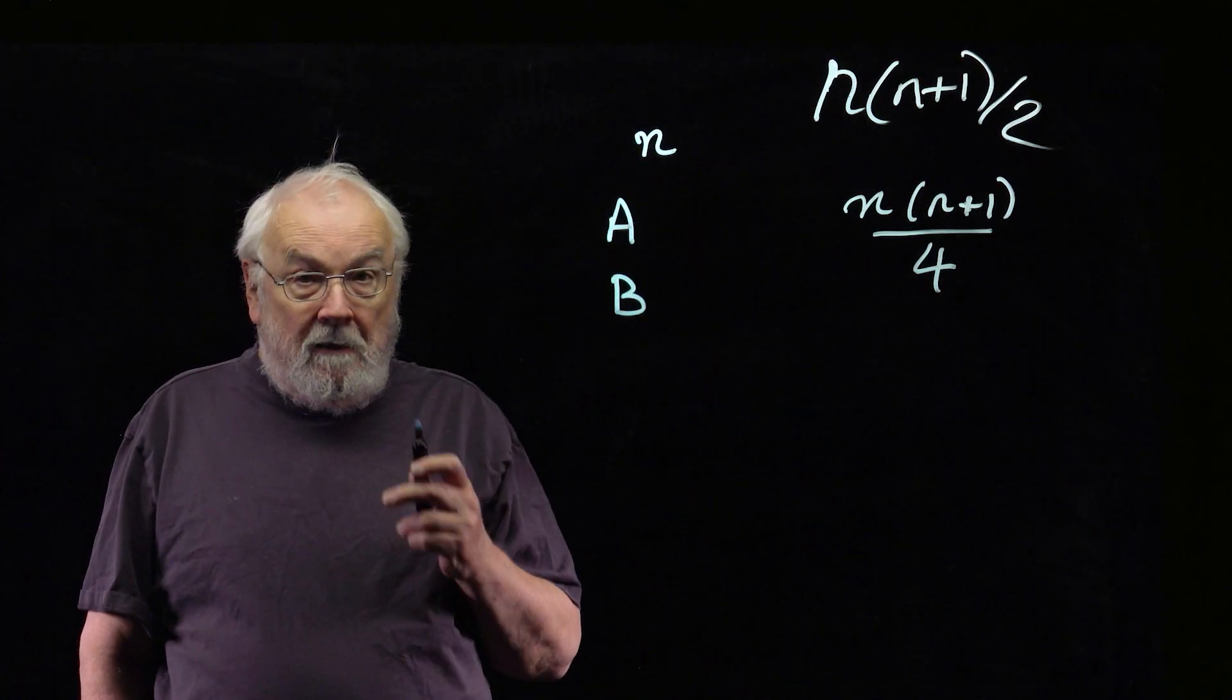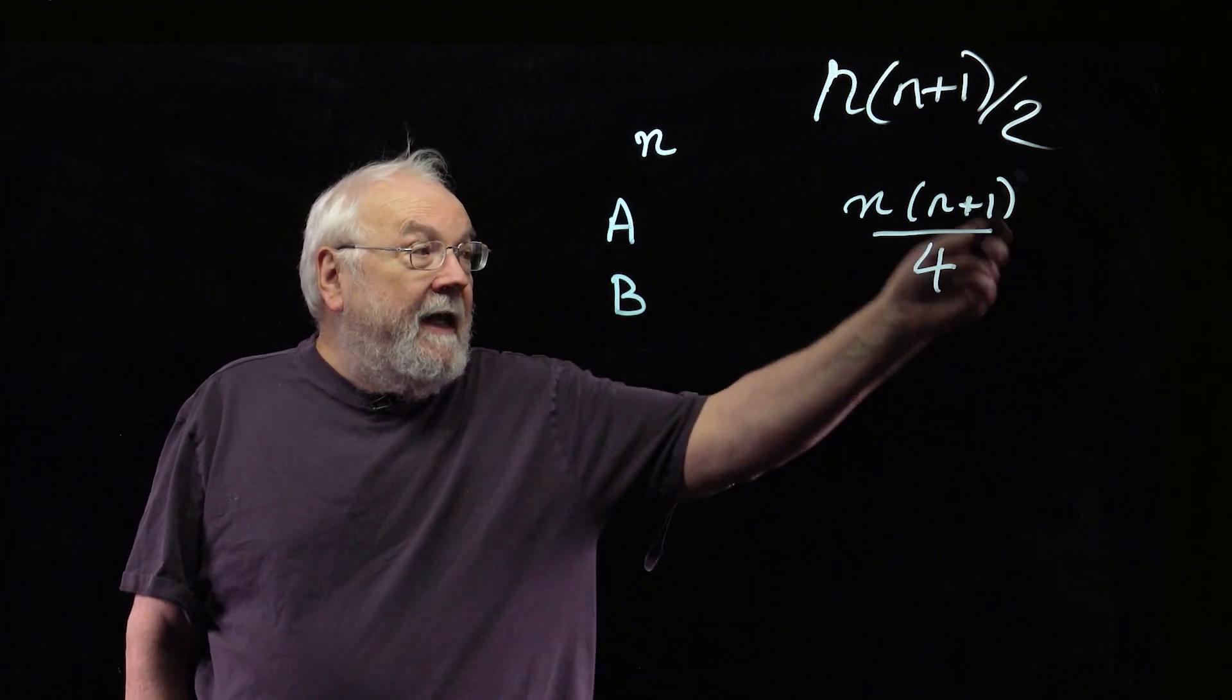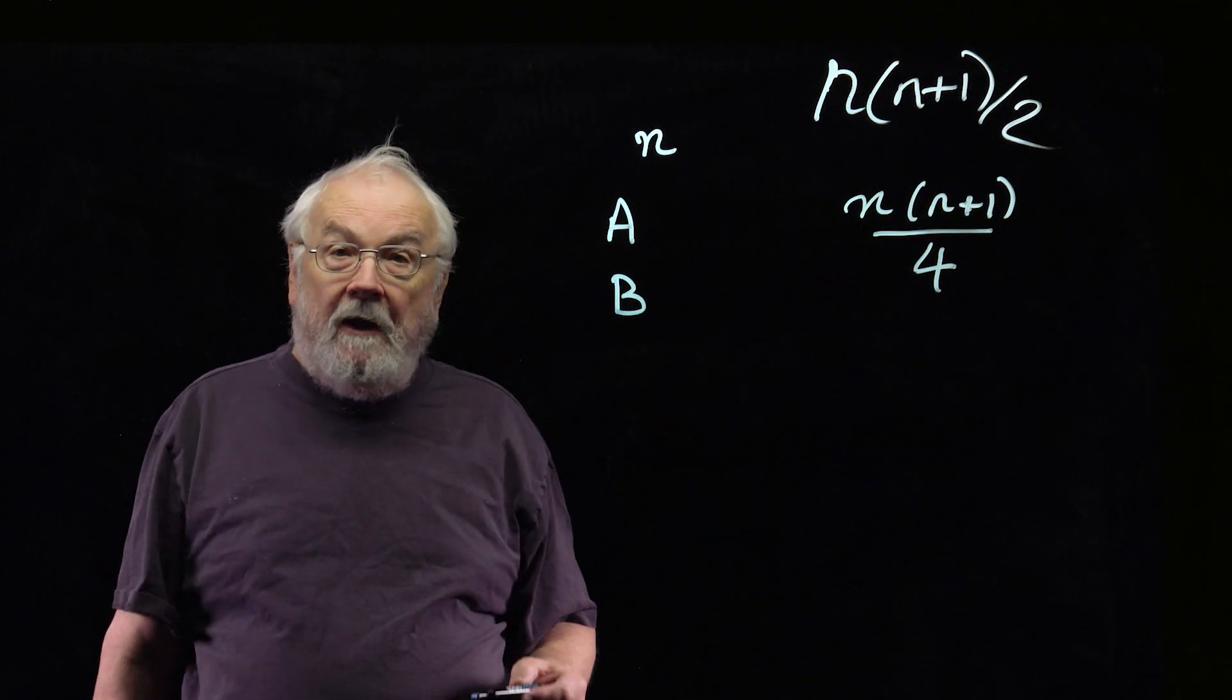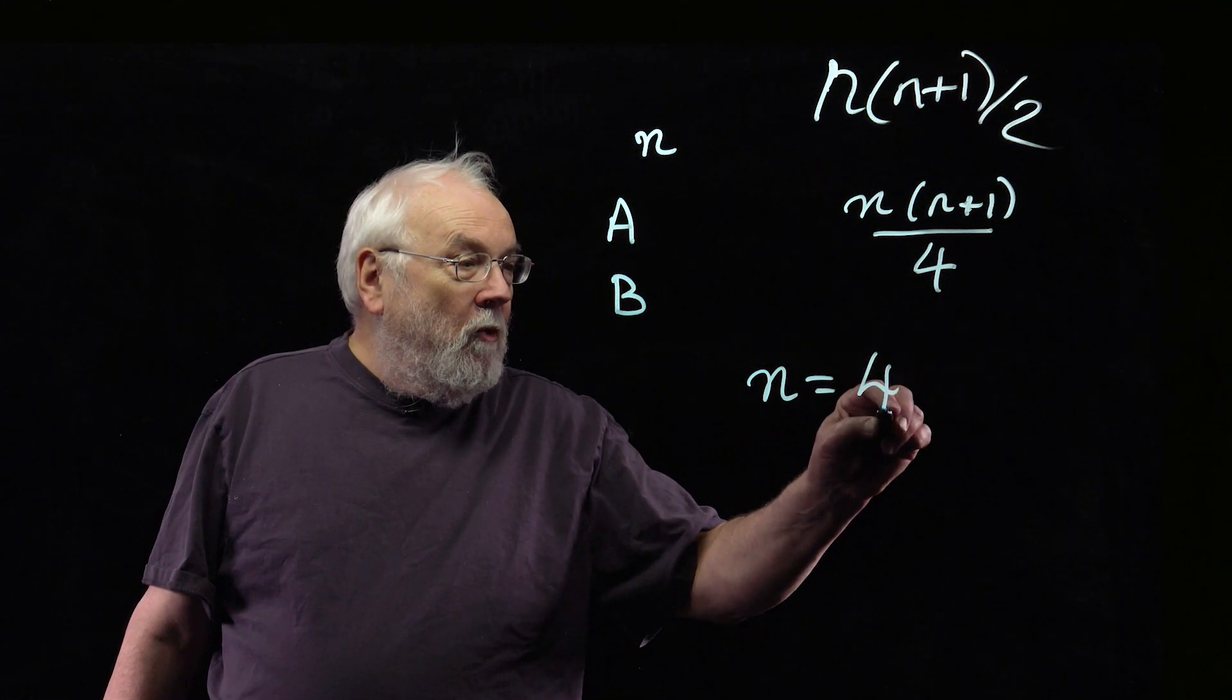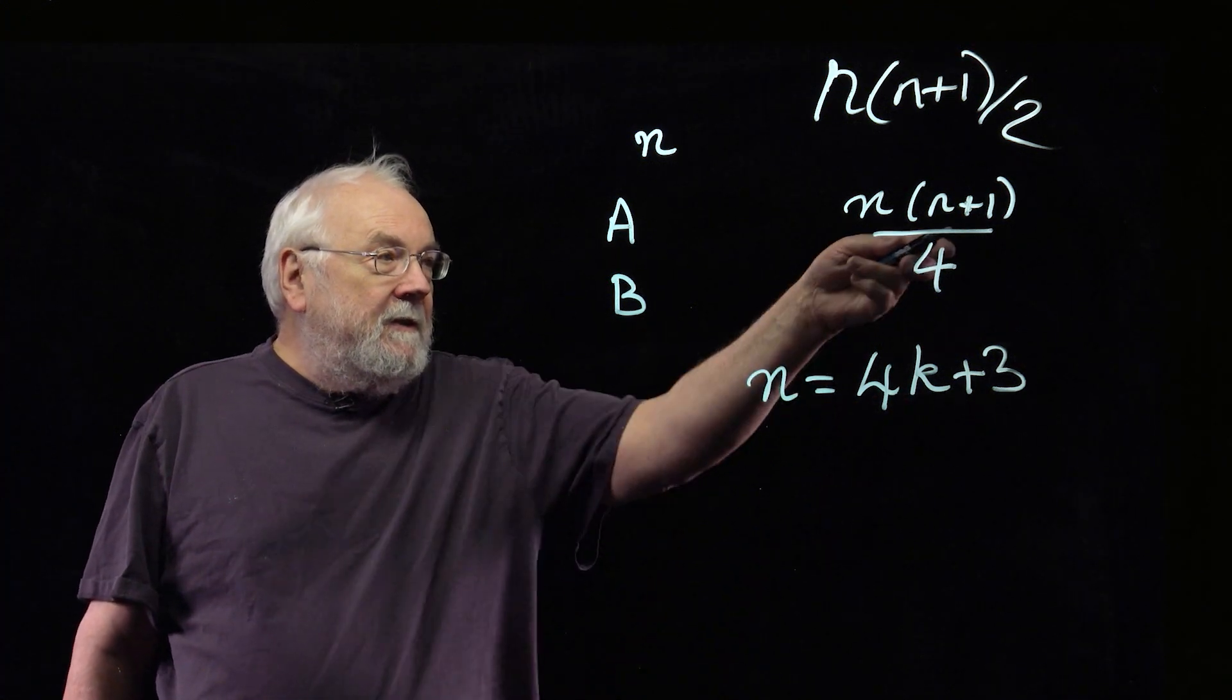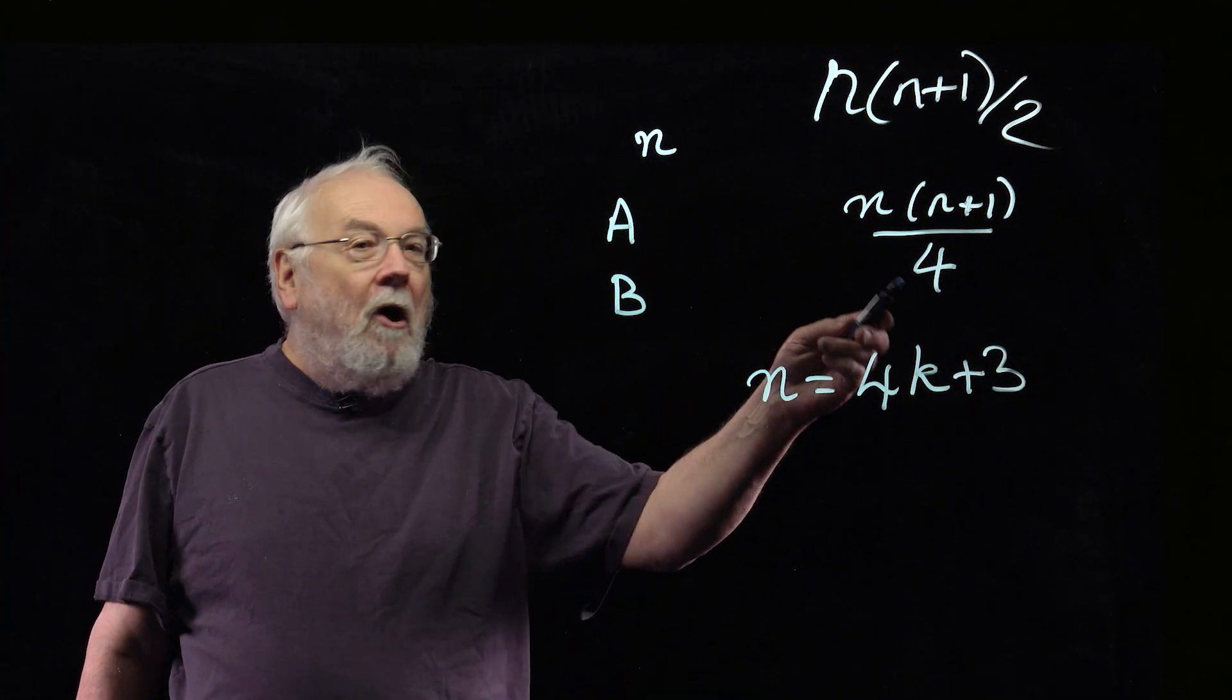Now n is an odd number, and this here is going to have to be a whole number as well. So 4 is going to have to divide n+1. That means that n has to be of the form 4k+3. If n is 4k+1, this just won't work because you won't get a whole number out.